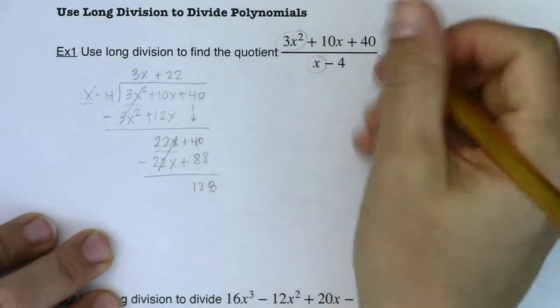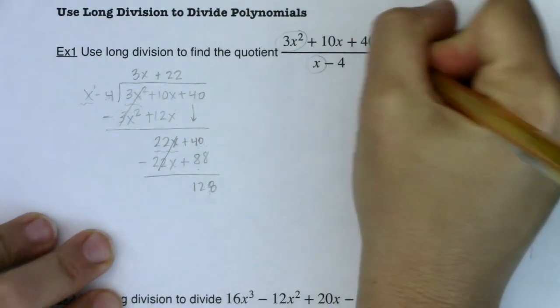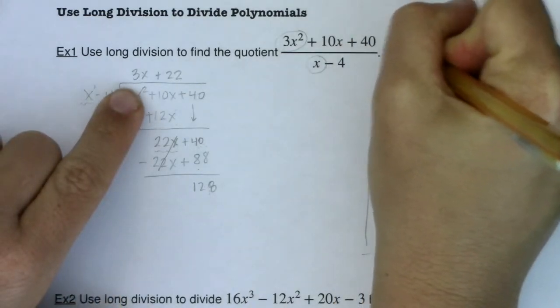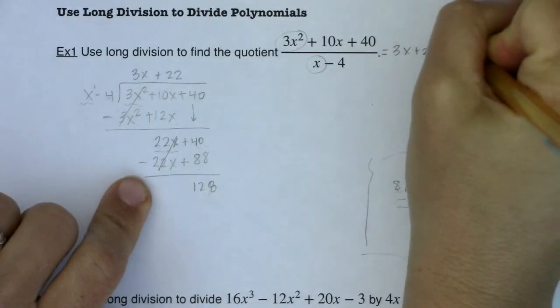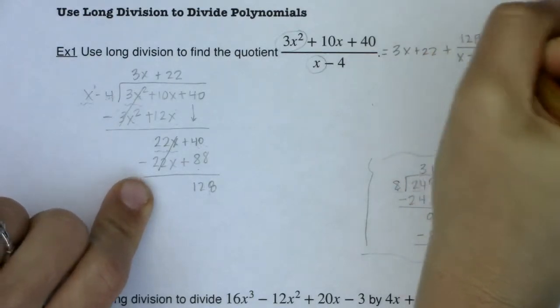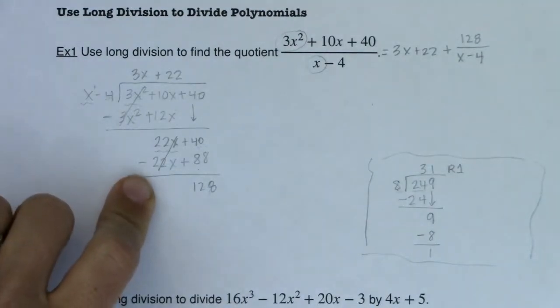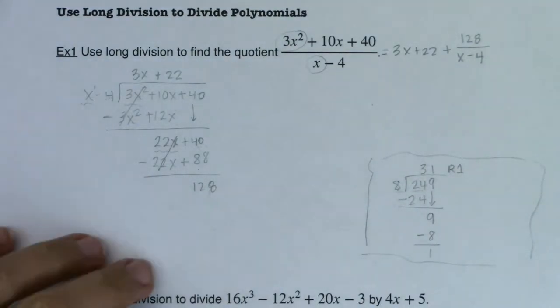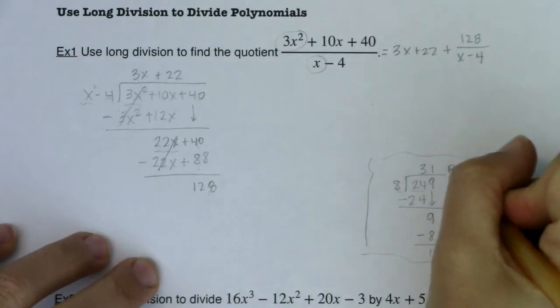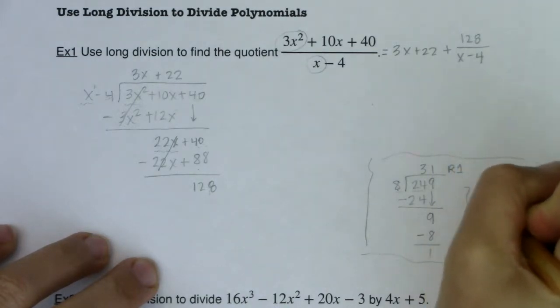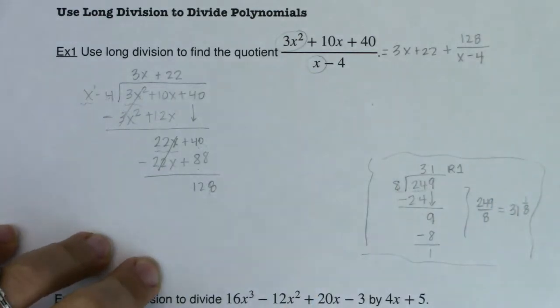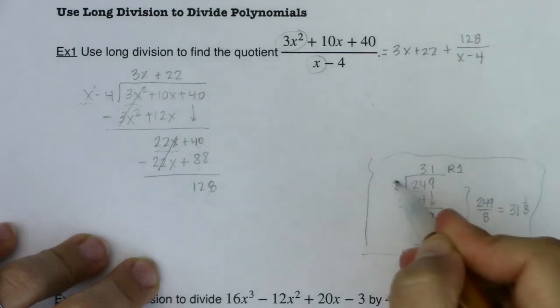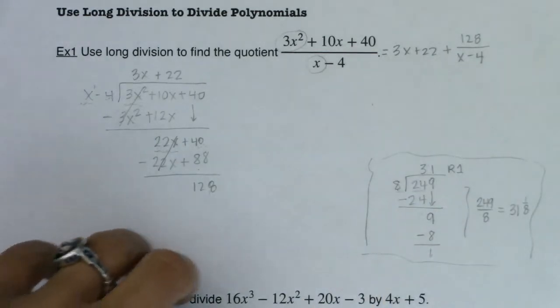And here's how we would write this up. We would say that this quotient is equal to 3x plus 22 plus my remainder of 128 over x minus 4. So that's how we do polynomial long division in the same way that I could have said 249 over 8 is like saying 31 and 1 eighths. So you do whatever your remainder is and you put it in ratio to that divisor.